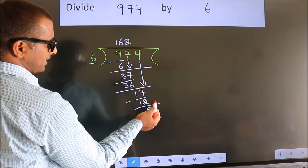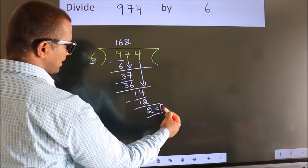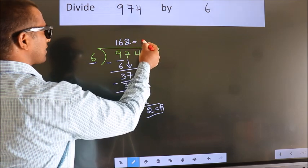No more numbers to bring it down. So we stop here. This is our remainder. This is our quotient.